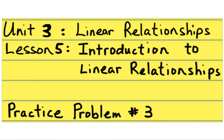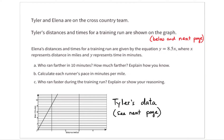This is practice problem number three from lesson five, Introduction to Linear Relationships. It's a problem about Tyler and Elena running — they're on the cross-country team. The questions are: who runs faster, who runs farther in 10 minutes, how much farther, and what's their pace — in other words, how many minutes does it take each of them to run a mile? These are proportional relationships.